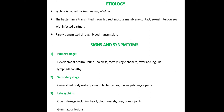The etiology: syphilis is caused by Treponema pallidum, transmitted through direct mucous membrane contact and sexual intercourse with infected partners. It is rarely transmitted through blood transfusion because various parameters must be met. Signs and symptoms occur across the primary, secondary, and late stages — the primary stage involves chancre development, which is a painless lesion.